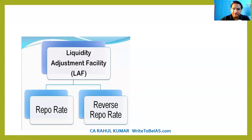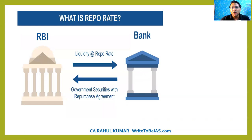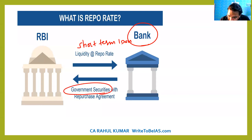Under the Liquidity Adjustment Facility there are two important aspects: one is repo rate, another is reverse repo rate, and then we have a third one — Marginal Standing Facility. First, what is the meaning of repo rate? Repo rate is also called the policy rate. It is the rate of interest at which the RBI gives a short-term loan to the banks, and in return the RBI gets government securities which will be repurchased by the banks later on.